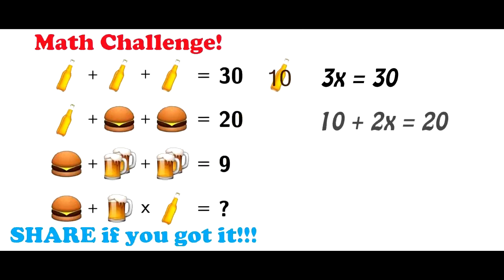Next, we see that ten plus two burgers equals twenty. So we take ten from each side, and you'll see that we're left with two x equals ten. We divide each side by two. One burger is equal to five.